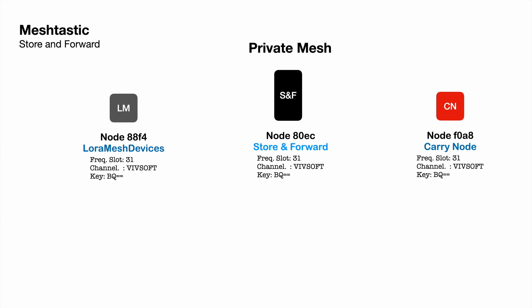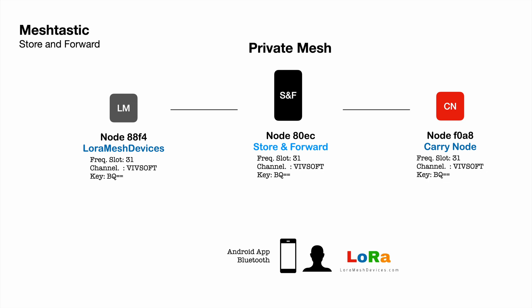These three devices are on their own slot 31. If someone else set up their Meshtastic device also on slot 31, they could join our network if they're in range — but they probably won't have the key 'BQ==' or whatever I set, so they'd see the traffic but couldn't decrypt it. That channel key makes it secure. These three can talk to each other on frequency slot 31, all sharing the same channel and the same encryption key.